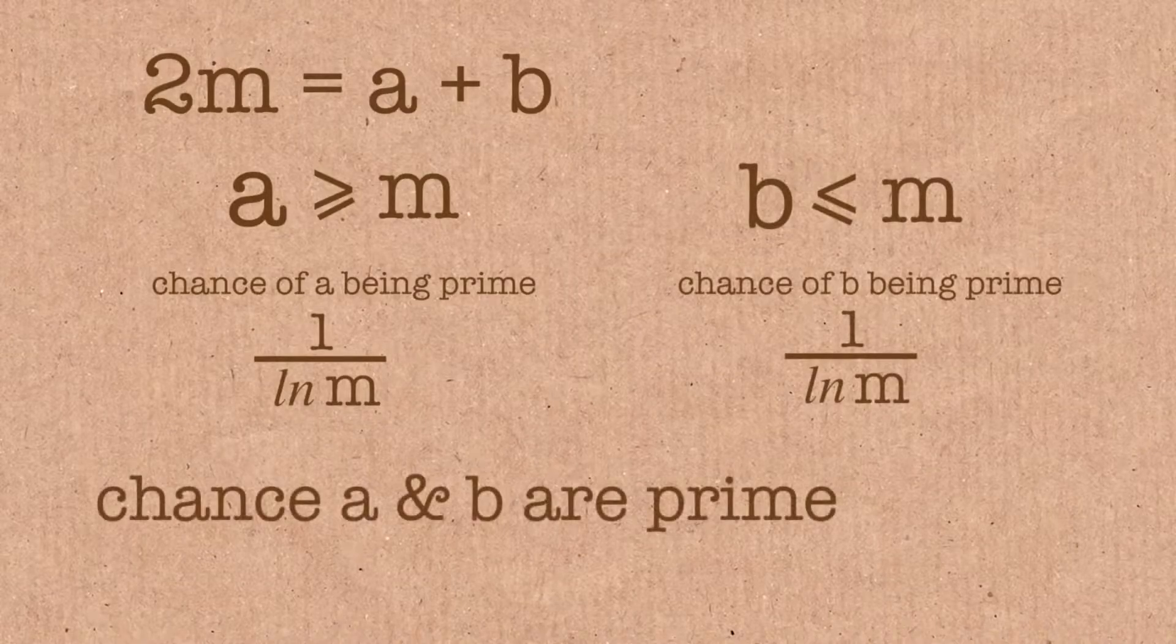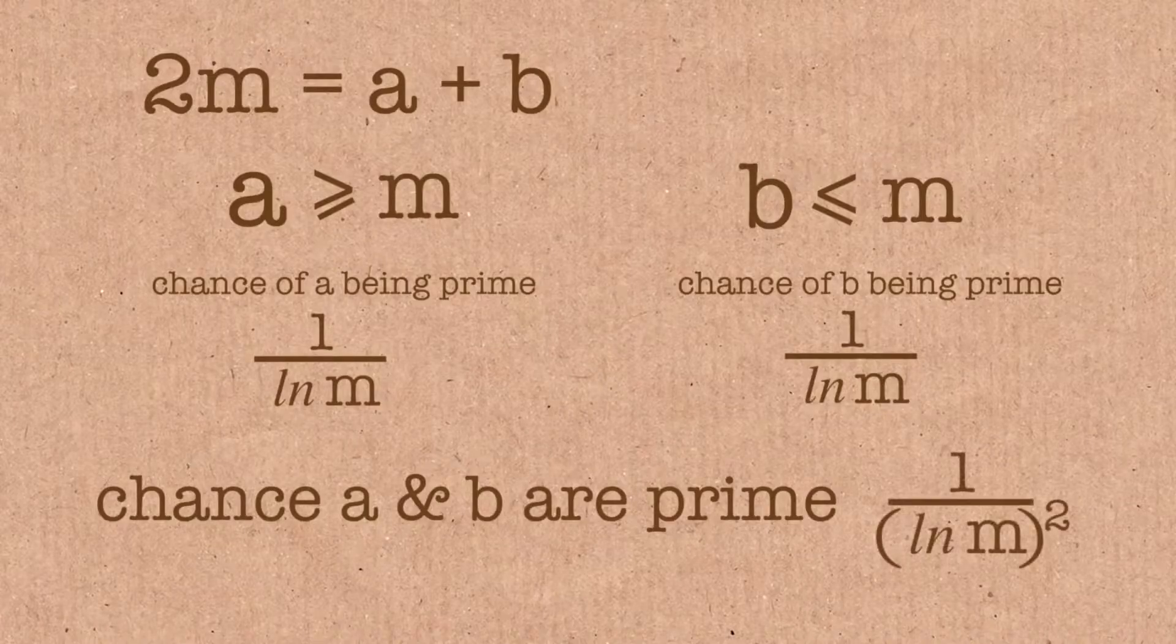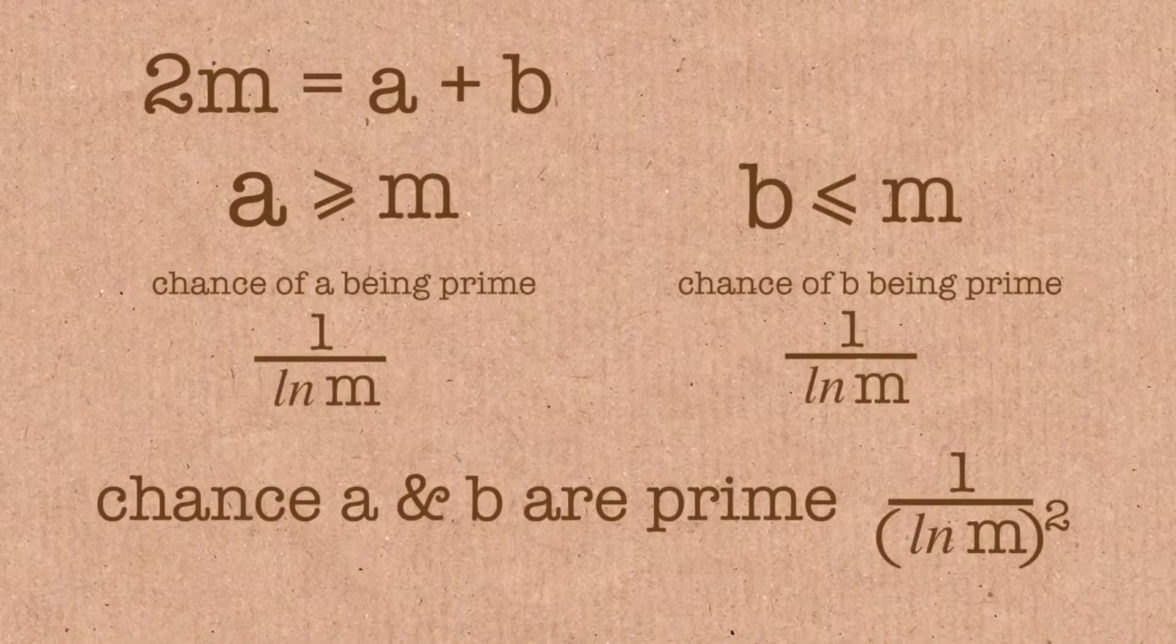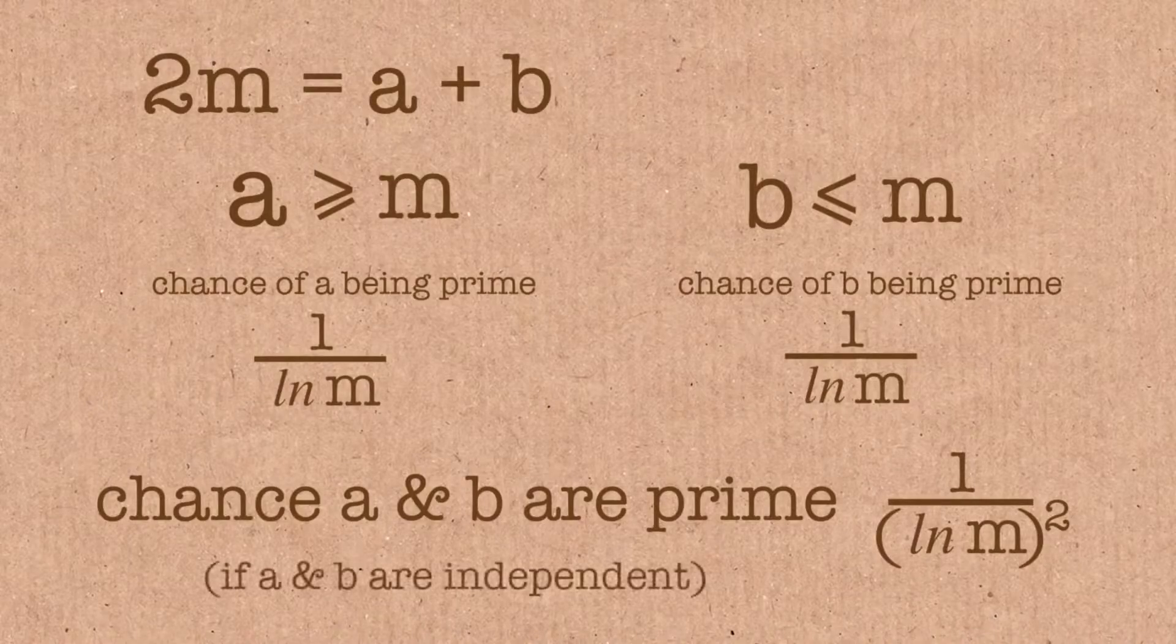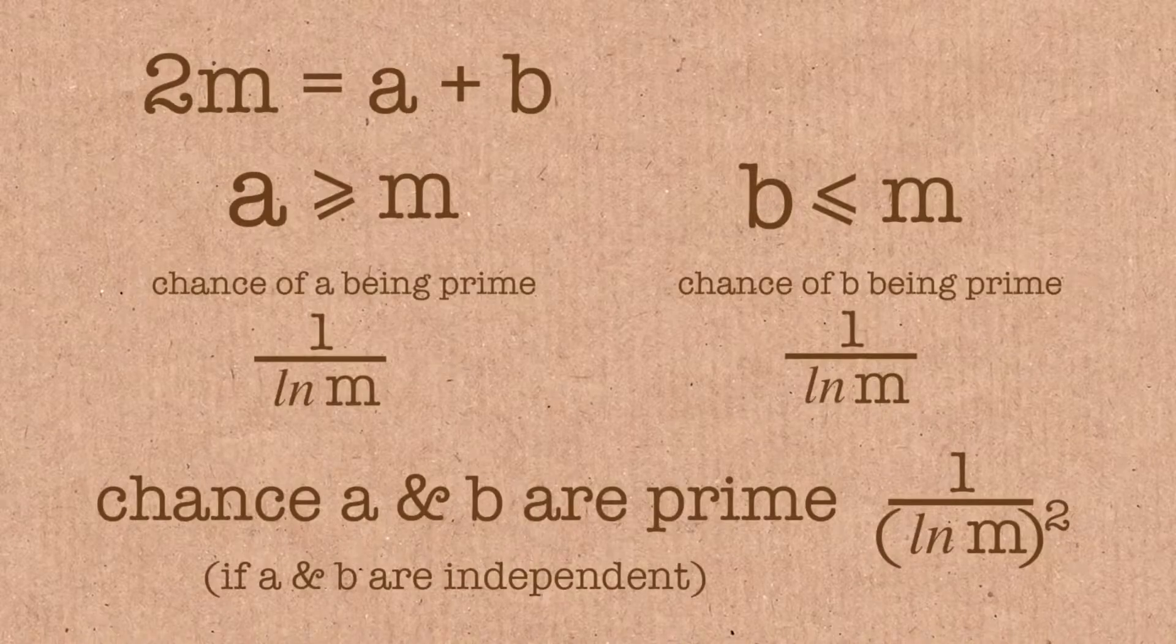So the chance of both of them being prime at the same time is 1 over the log of m squared. Well, that's a bit of a fib. It would be 1 over the log of m squared if they were independent events, but it's not quite independent. We'll discuss, we'll talk about that in a minute.